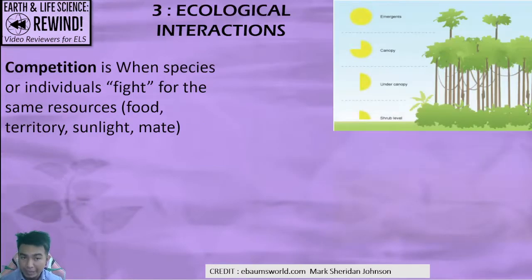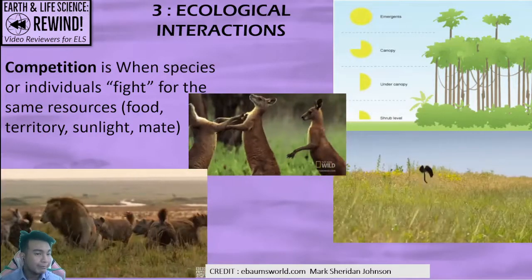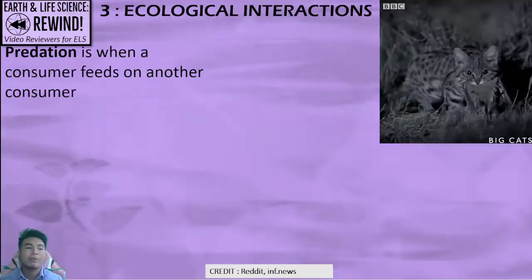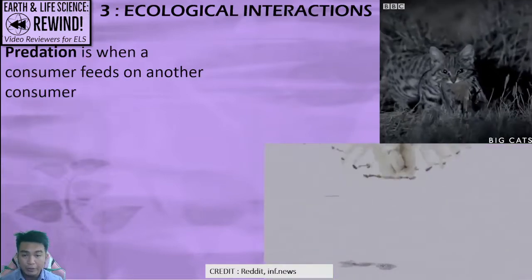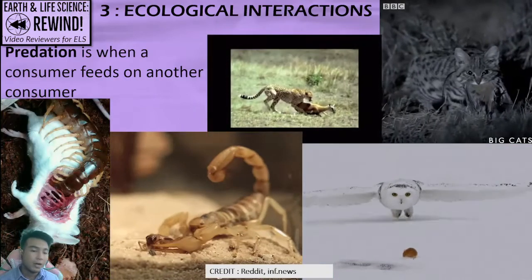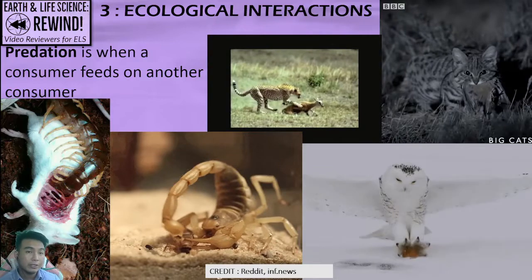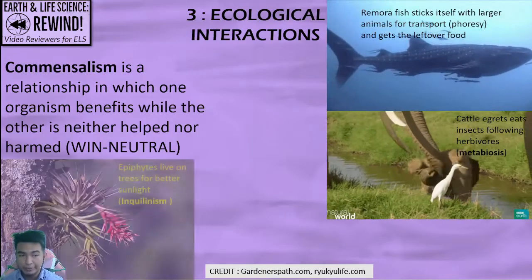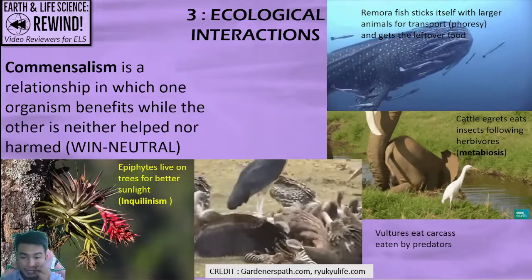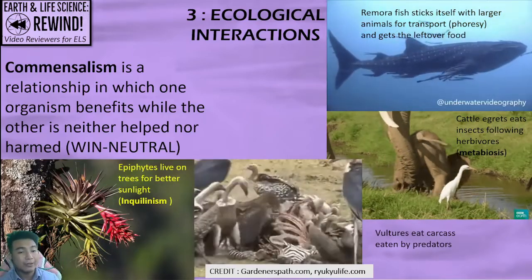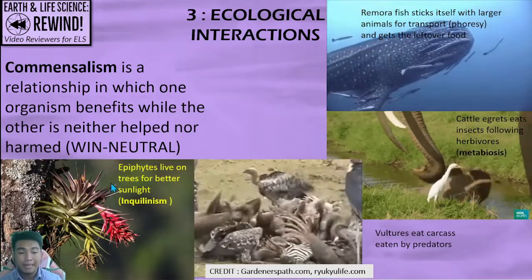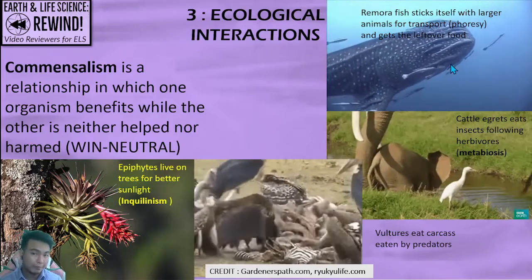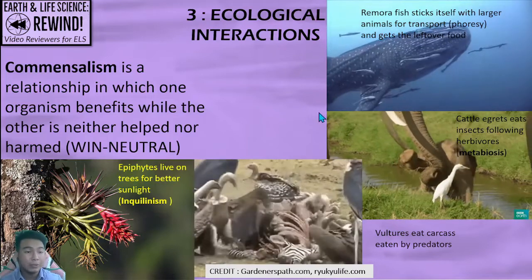First is competition — when organisms fight for the same resources such as food, territory, sunlight, or a mate. Predation is when a consumer feeds on another consumer; carnivores and omnivores are part of this ecological interaction. Commensalism is a relationship in which one organism benefits and the other is neither helped nor harmed. Plants taking spaces on trees and fishes sticking on larger fishes for protection are examples of commensalism.